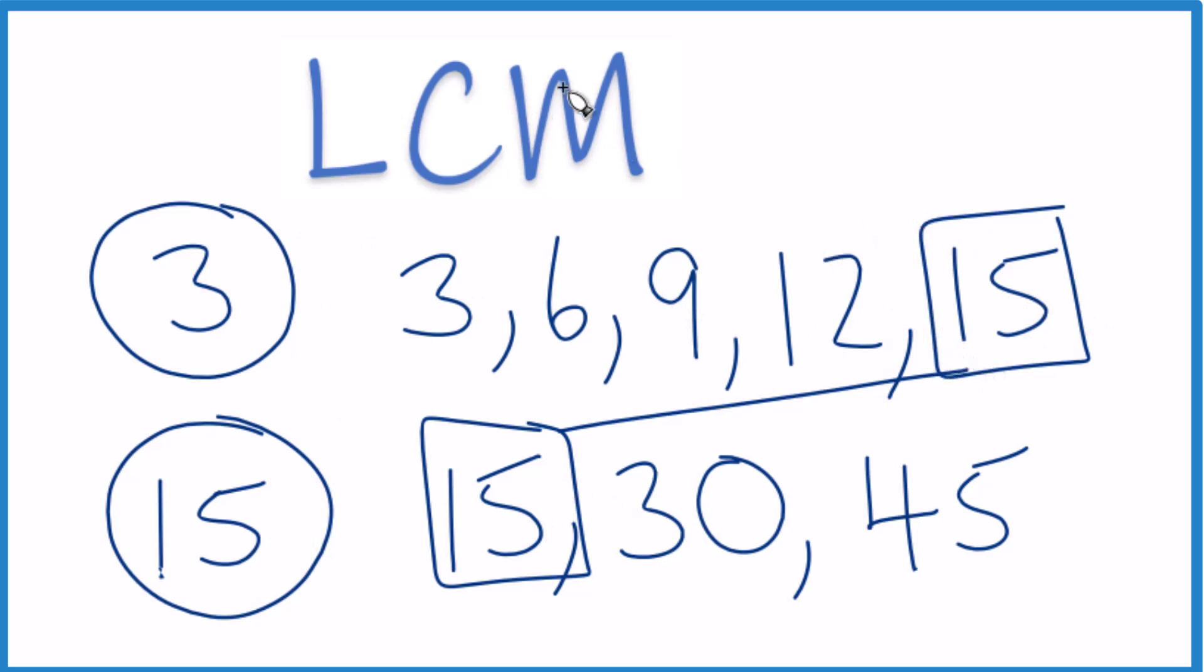So that's it. That's the LCM for 3 and 15. The answer is 15. You could find this using something like prime factorization, but usually with smaller numbers, this is pretty easy.